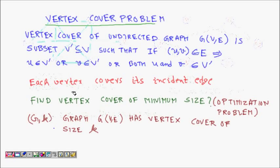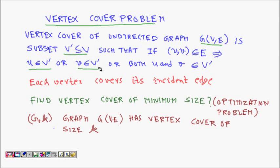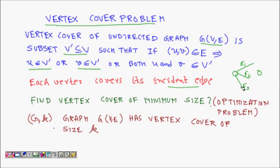Let's see the formal definition. A vertex cover of undirected graph G(V,E) is a subset of vertices V-dash, which is a subset of V, such that if UV is an edge, then either U belongs to V-dash, or V belongs to V-dash, or both. V-dash is a set of vertices which is a subset of V such that any edge UV has at least one endpoint in V-dash. Each vertex covers its incident edges.